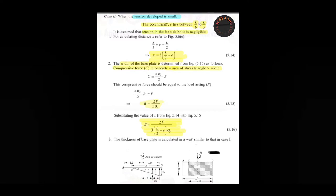For understanding the design steps of this case, you need to see this diagram. We assume that the tension in the far side bolt is negligible, so we are neglecting this part A to O. What we get here is the stress distribution diagram - we get a triangle.